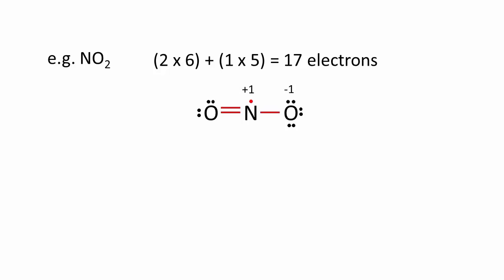Therefore, for a system like NO2 with 17 valence electrons, we get a Lewis dot structure where the nitrogen atom is associated with only seven electrons.